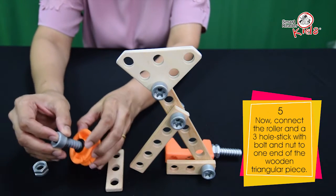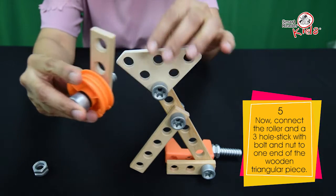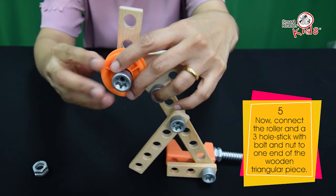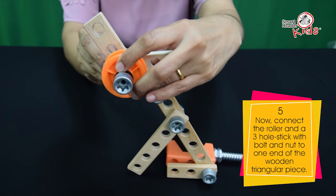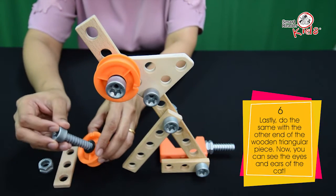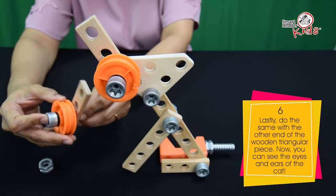Now, connect the roller and a 3-hole stick with bolt and nut to one end of the wooden triangular piece. Lastly, do the same with the other end of the wooden triangular piece.